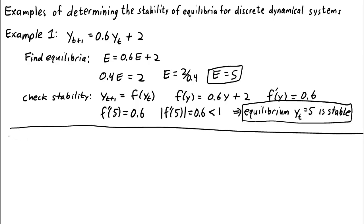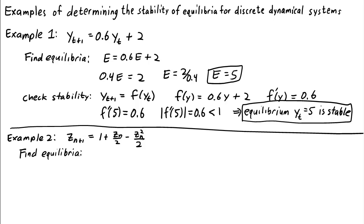Let's try another, slightly more complicated example. This time we'll make it nonlinear: z(n+1) = 1 + z_n/2 − z_n²/2. Let's find the equilibria. We'll use e again, so we have e = 1 + e/2 − e²/2.